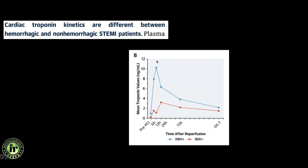Cardiac troponin markers were also significantly higher in patients with IMH — showing a rapid rise that remained persistently elevated even after day five or day seven. Cardiac troponin I is a parameter for myocardial necrosis; the more the necrosis, the higher the values.